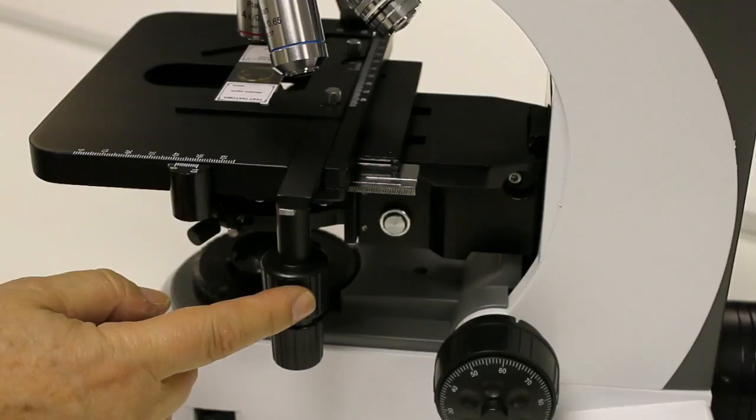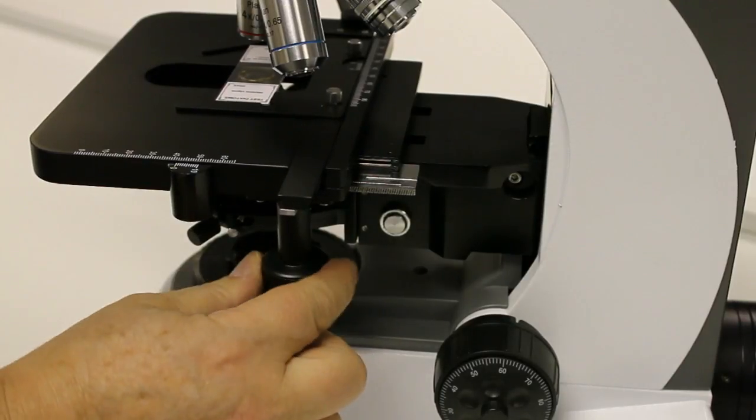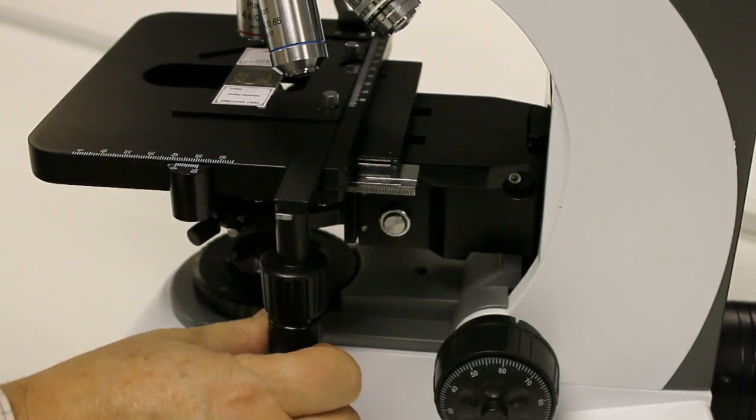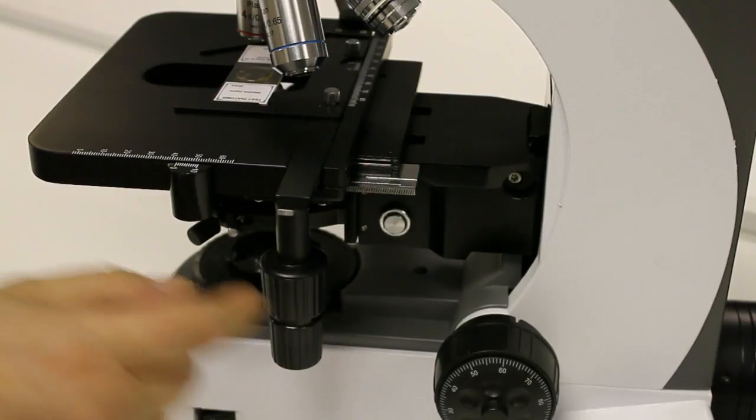And then the drop-down coaxial controls here - the top one moves the slide up and down, as you can see, and then this one moves it backwards and forwards.